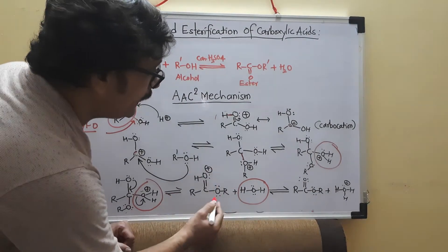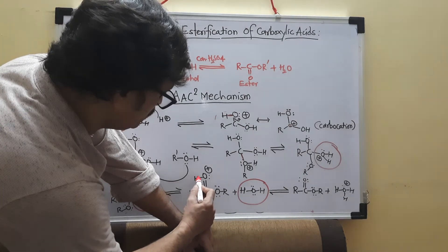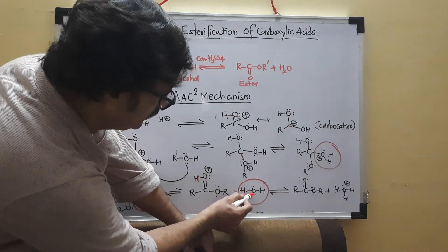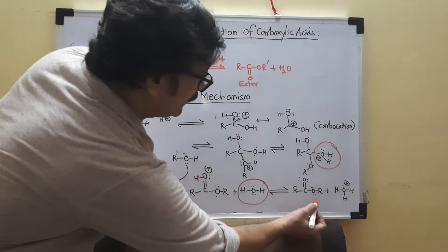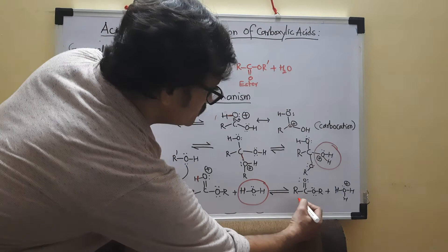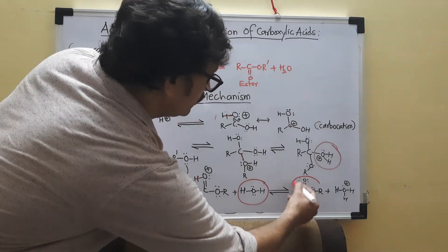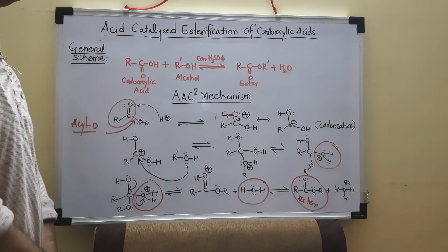And this compound can transfer this H from positively charged oxygen to the electron rich oxygen of water. And that is happening actually. So we get here our ester. So ester is formed in this way by using AAC2 mechanism. Thank you.